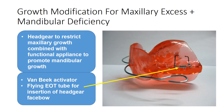For maxillary excess combined with mandibular deficiency, headgear is used to restrict maxillary growth while being combined with a functional appliance to promote mandibular growth. An example of this is the Van Beek activator, which has a facebow tube for insertion of the headgear facebow.